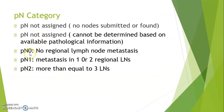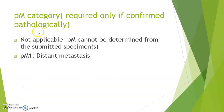PN category for small intestine: N0 — no regional lymph nodes; N1 — metastasis in 1 or 2 regional lymph nodes; N2 — more than or equal to 3 lymph nodes show metastasis. PM category: not applicable when it cannot be determined from submitted specimens; PM1 — distant metastasis.